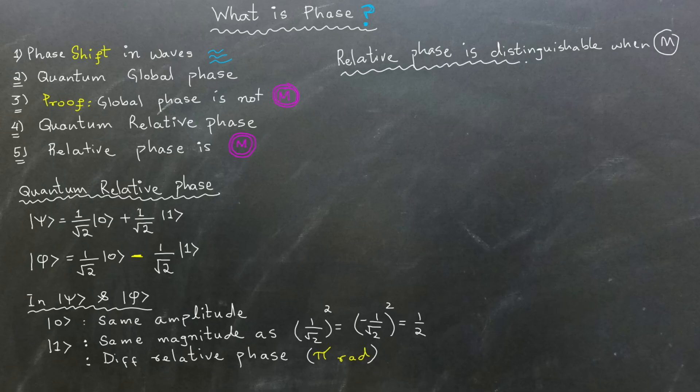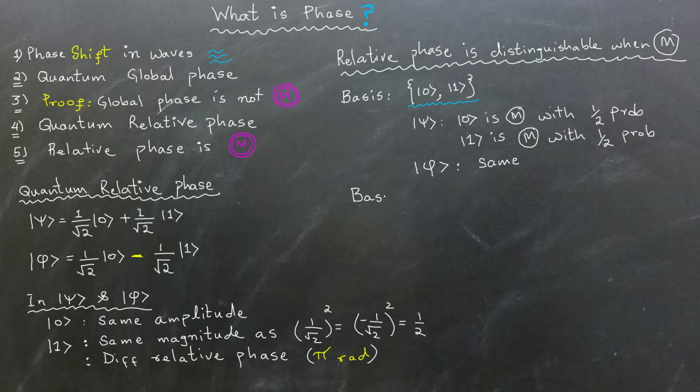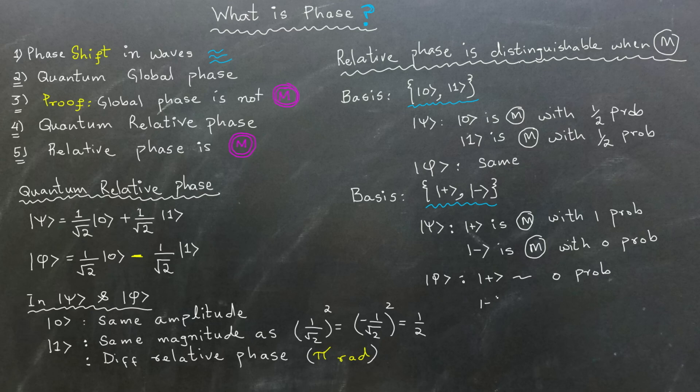If we choose the right basis, we can distinguish these states. For instance, in the basis of ket 0 and ket 1, both registers measure the same. However, in the basis of ket plus and ket minus, these registers are distinguishable. If you have any doubts about how to measure these registers in different bases, then please watch my videos about measuring qubits and post your questions in the comments.